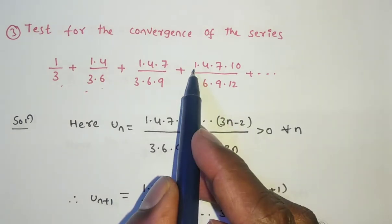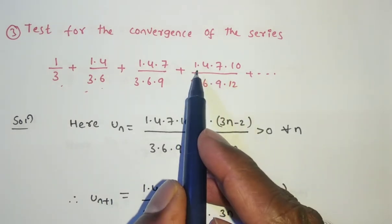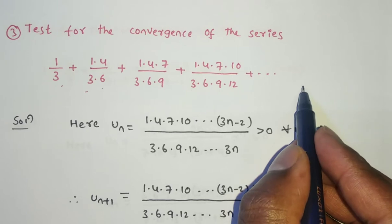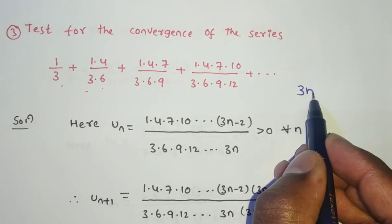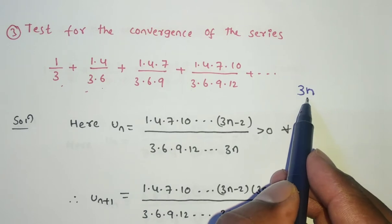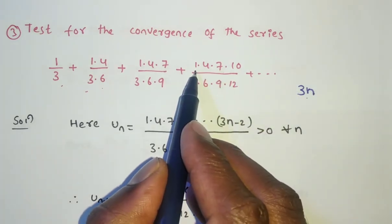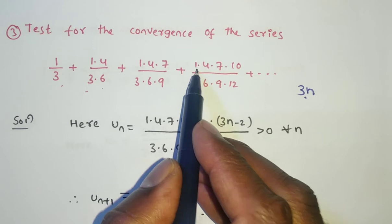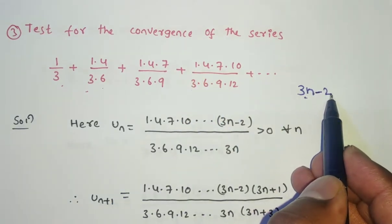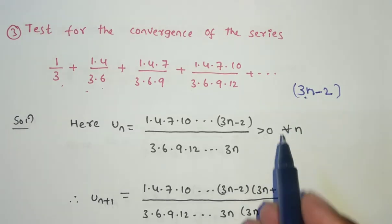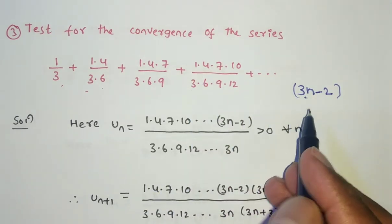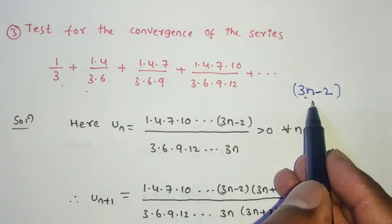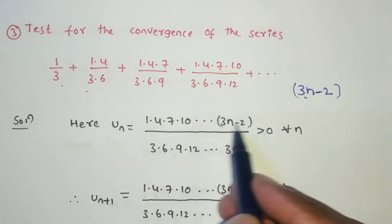To find the nth term, first look at the common difference in the numerator: 1, 4, 7 — the common difference is 3. So write 3n. Putting n=1 gives 3, but the first term is 1, so subtract 2: the numerator is 3n−2. Checking: n=1 gives 1, n=2 gives 4, n=3 gives 7. Satisfied.